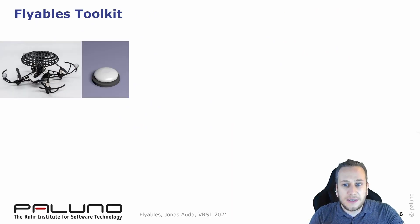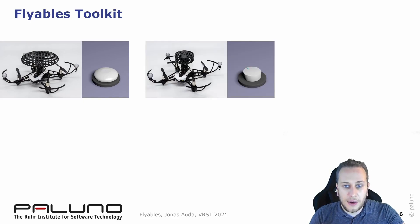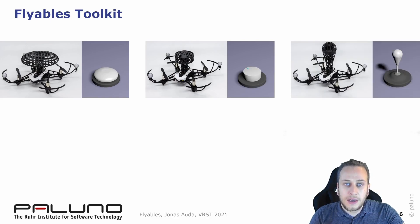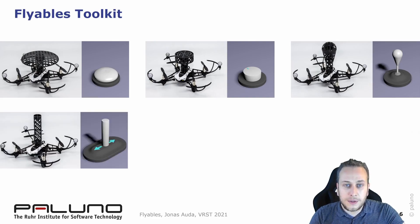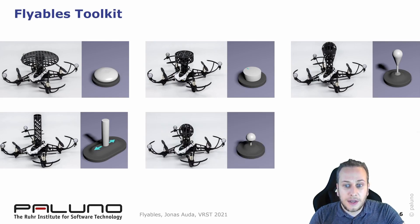The button can be used to provide discrete one-time input events. The knob allows one to rotate target objects around one axis. The joystick allows input with three degrees of freedom. Through the slider, translations in one dimension can be realized. And the 3D-mouse can be used to translate objects in 3D space.